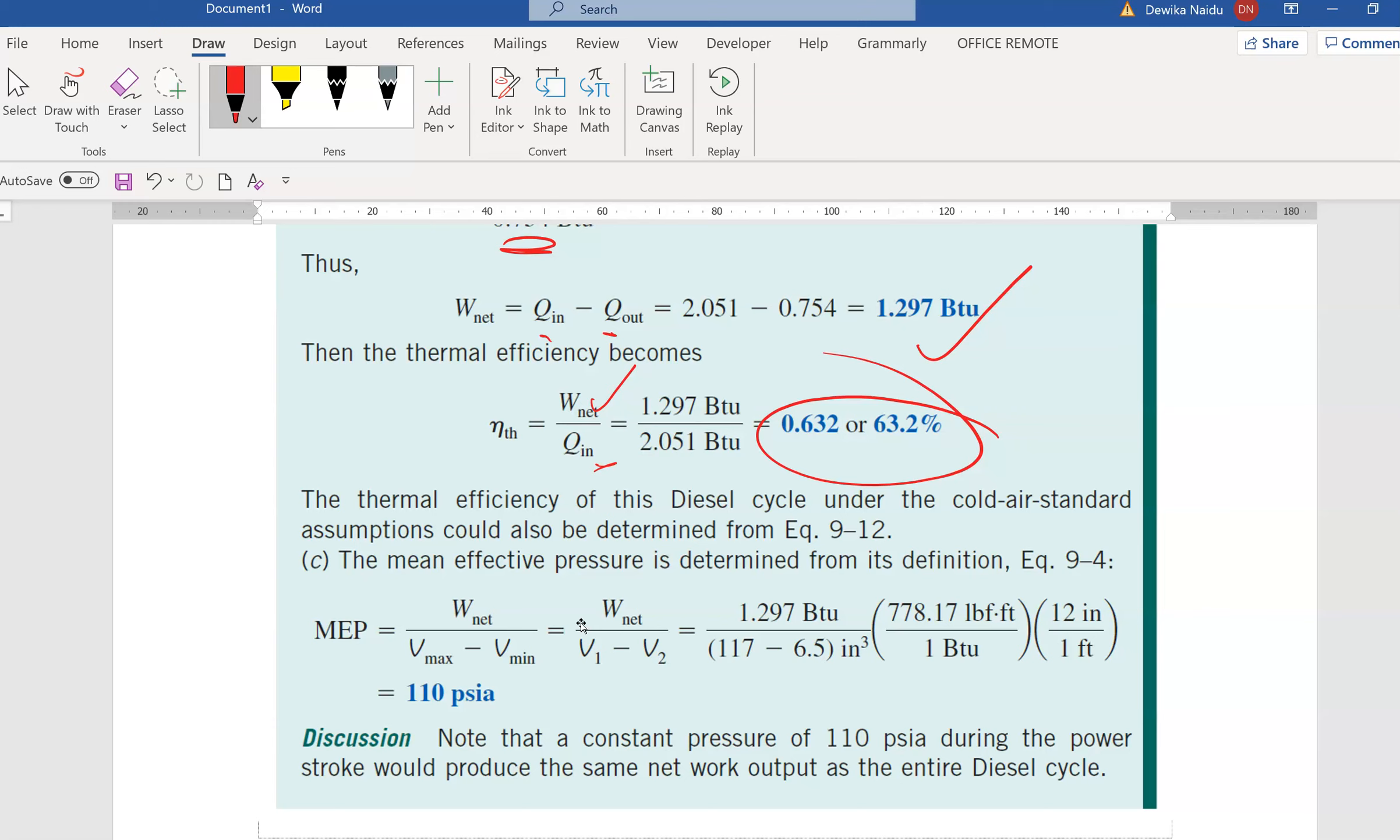The last one is actually to find the MEP. MEP is also a standard formula. Plug in all the information that you have actually got from the previous working. 1.297 times V1 minus V2. You get your MEP as 110 psia. This is the end of this chapter. Please do the questions that are requested and submit it on time. Bye.